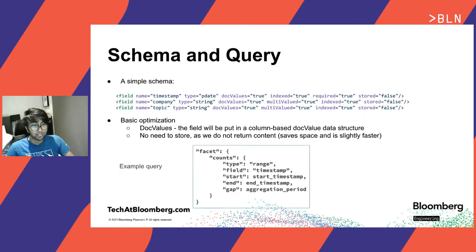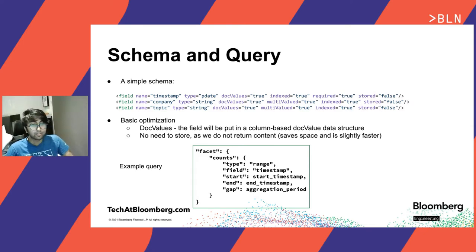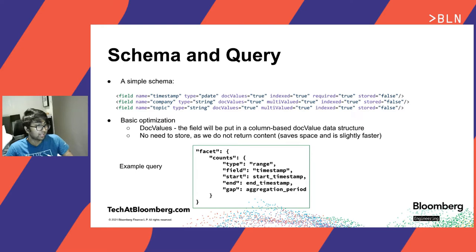The next important component is the query we will use for faceting. It is a simple JSON facet query from the Solr API. The query basically asks Solr to give us the results from a start timestamp to an end timestamp, aggregated by a period called aggregation period, which you can see as 'gap' in this query.